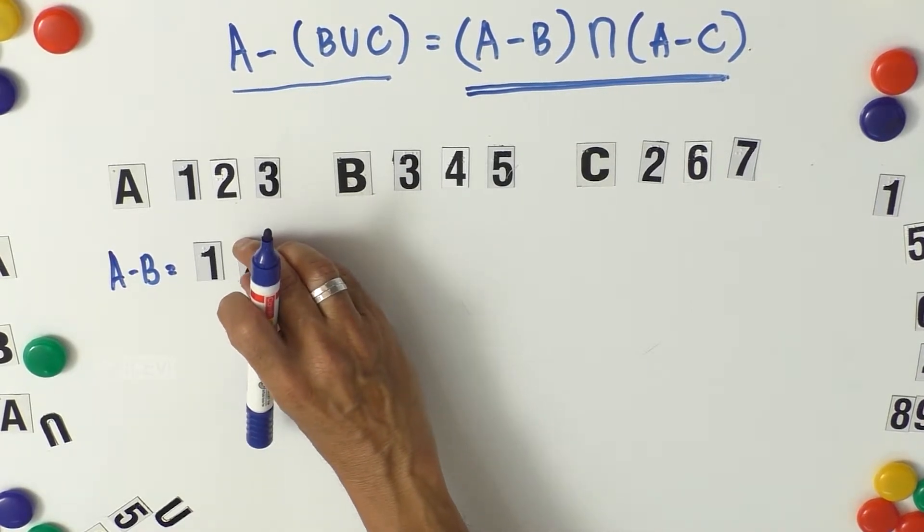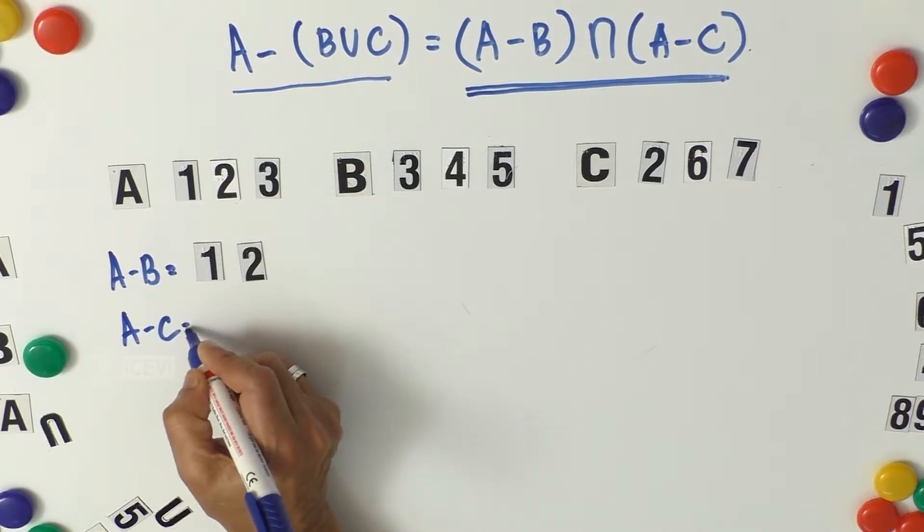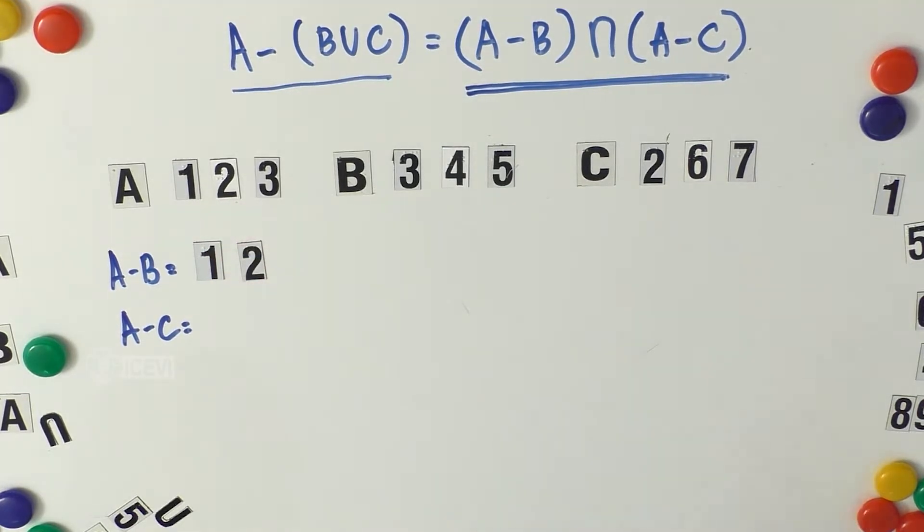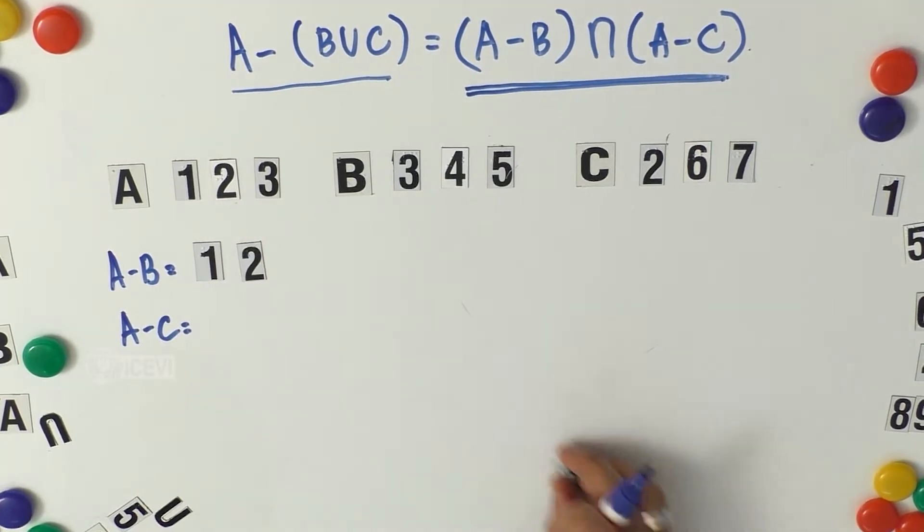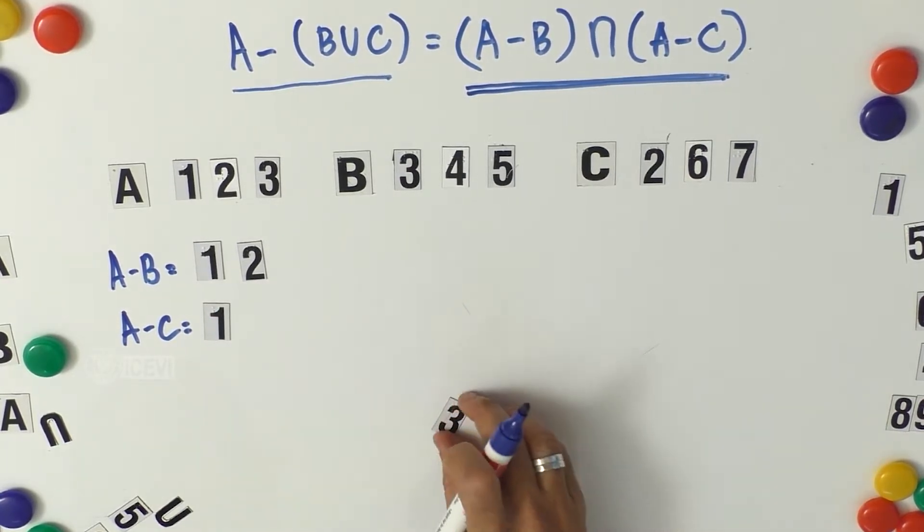Now let us go for A minus C. What is not in C which are in A? That is 1 and 3. So A minus C is 1 and 3.